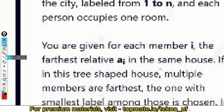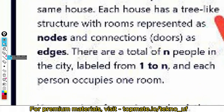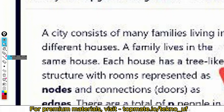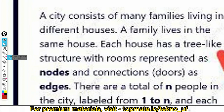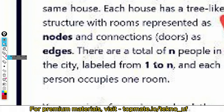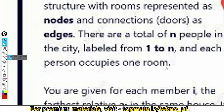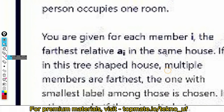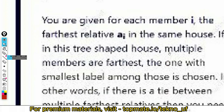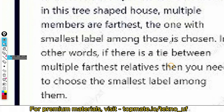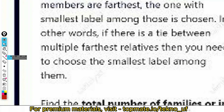The second question is about families. A city consists of many families living in different houses — a family lives in the same house. Each house has a tree-like structure with rooms represented as nodes and connections as edges. There are N people in the city labeled from 1 to N, and each person occupies one room. You are given, for each member i, the furthest relative Ai in the same house. If multiple members are furthest, the one with the smallest level is chosen.